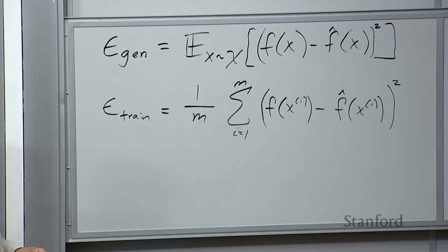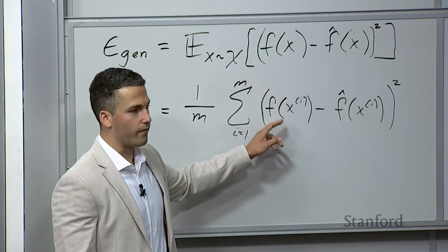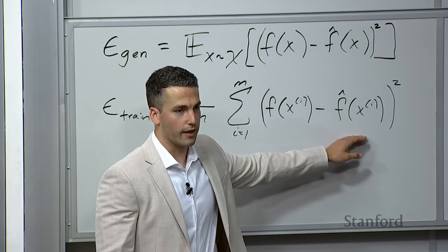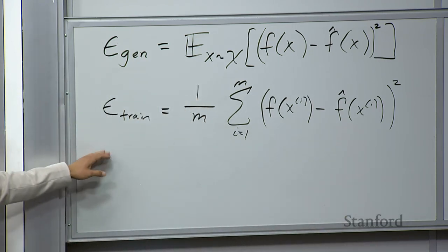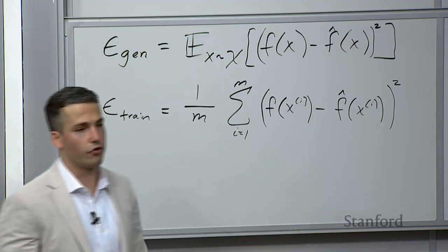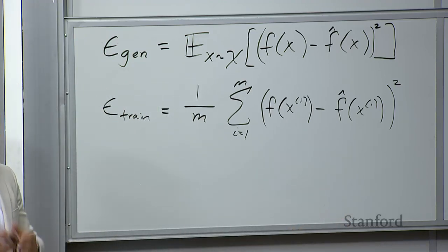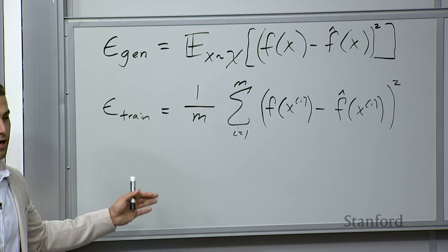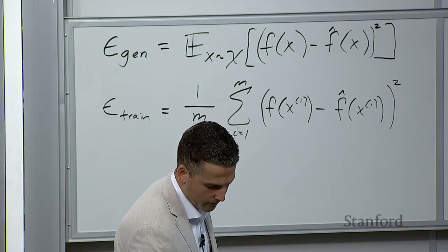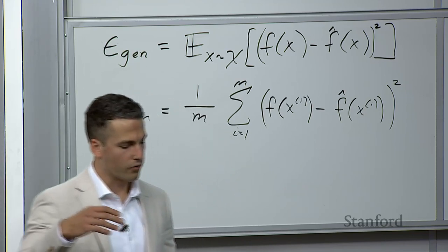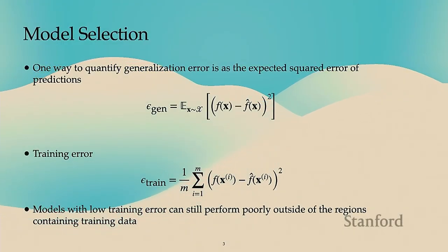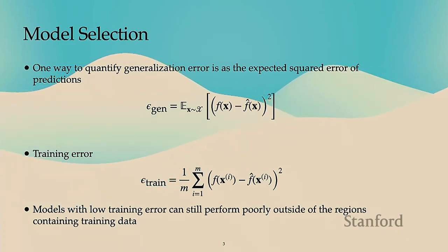The training error avoids that problem because we know the function evaluations at those specific data points and compare them with our predictions. However, just because we have a low training error does not mean it's a good model — we might fit training data well but generalize terribly to unseen data. The main point is that models with low training error can still perform poorly on data not yet seen, so training error is not a reliable indicator of generalization error.